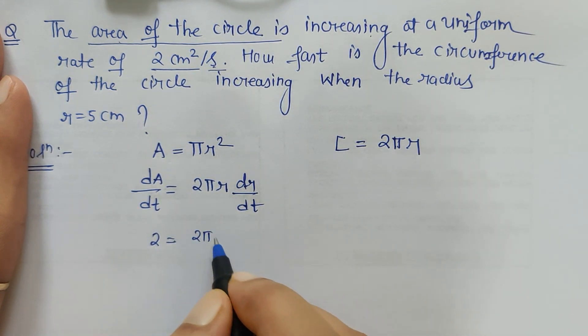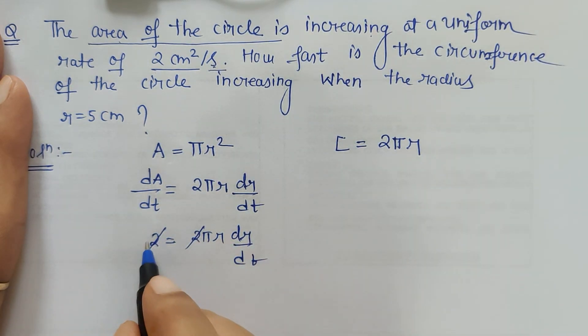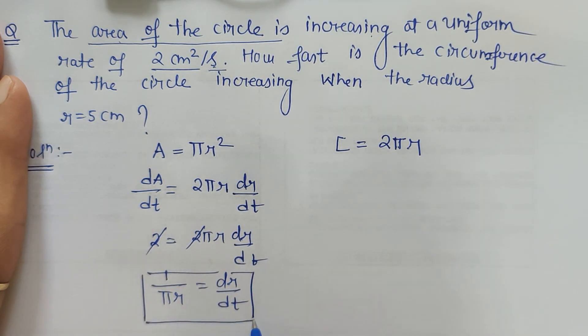This is 2πr dr/dt, so from here 2 and 2 gets cancelled. We have only 1, so 1 upon πr we get for dr/dt. Let's keep this in mind which may be used.